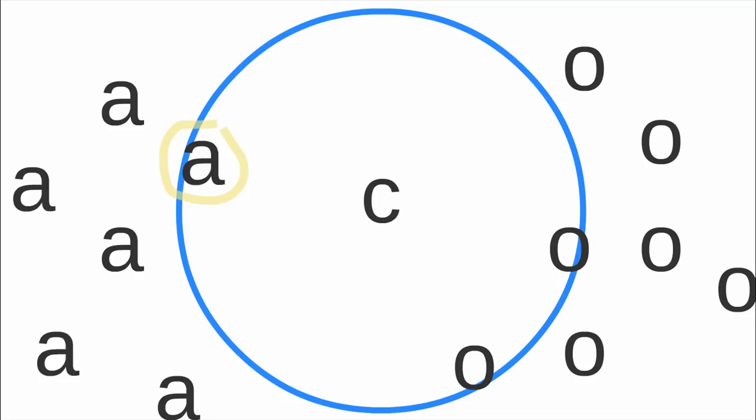We have one nearest neighbor of class A and two elements of class O which are near to C. So we have two votes for O and one vote for A. In this case, the class of element C is going to be O. This is very simple how the K nearest neighbor algorithm works.